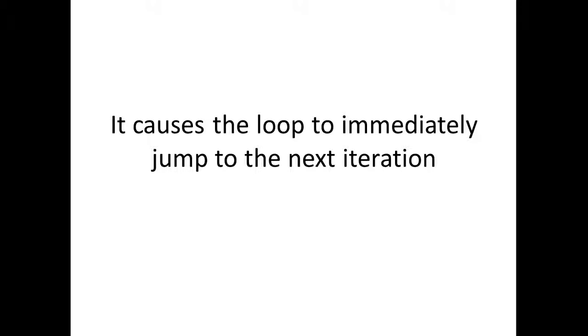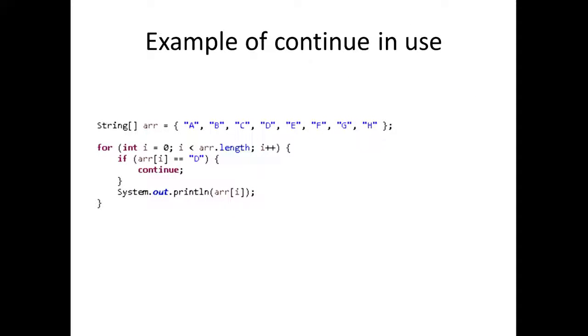So the continue keyword causes the loop to immediately jump to the next iteration of the loop. If we look at an example right here, what we have is an array. Inside this array we have an array of strings, and as you see we have the elements A, B, C, D, E, F, G, and H.